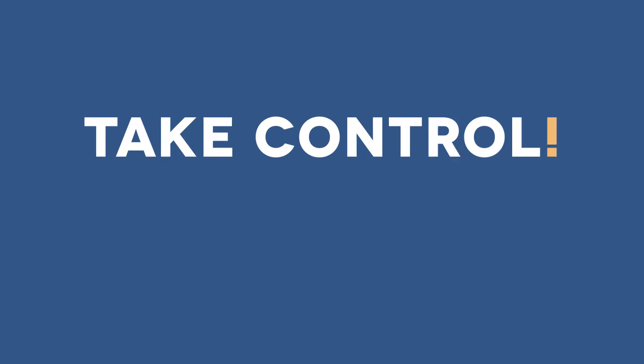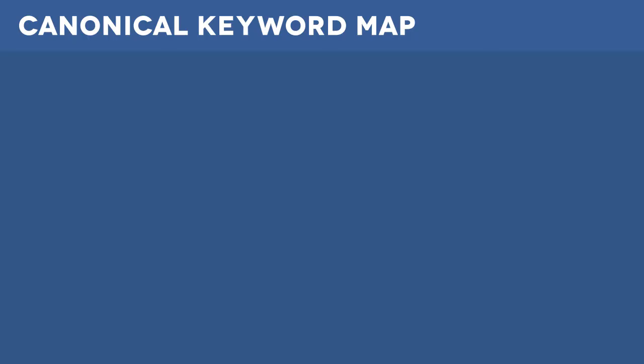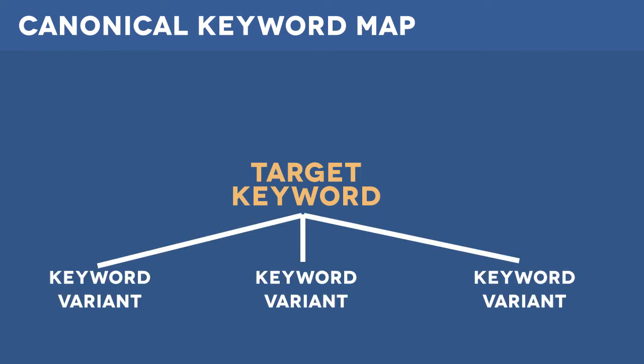Take control of your SEO strategy with a canonical keyword map. Canonicalization is a term you hear often in search engine optimization, but in this case we're talking about making one page own a given keyword, phrase, or topic. A canonical keyword map assigns target keywords and their closely related variants to a single canonical page, sending clear signals to Google and, perhaps more importantly, your human visitors, as to which page is the authority and the place they're most likely to find the content they're looking for.